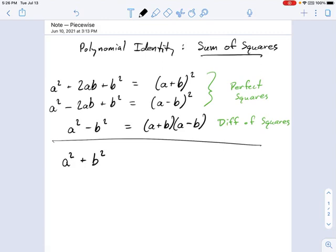Here's a quick heads up about a polynomial identity we didn't talk about before, called the sum of squares. The reason we didn't talk about it before was because we weren't talking about complex or imaginary numbers.